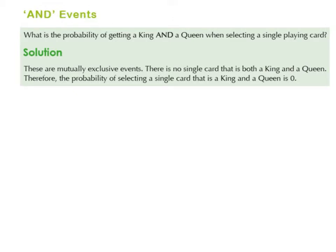And events. What is the probability of getting a king and a queen when selecting a single playing card? These are mutually exclusive events. There is no single card that is both a king and a queen. Therefore, the probability of selecting a single card that is a king and a queen is zero. So it's never going to happen — it's impossible.